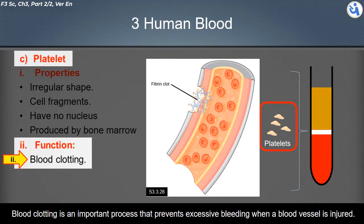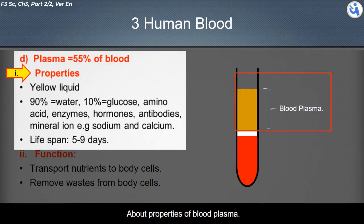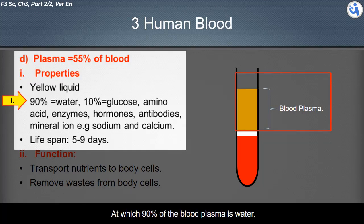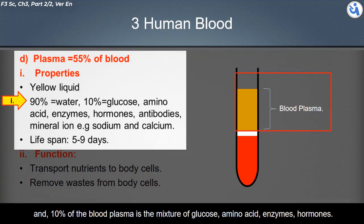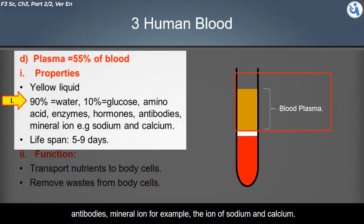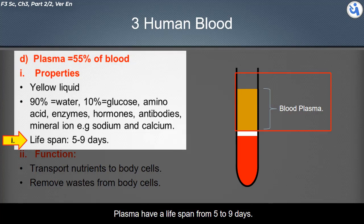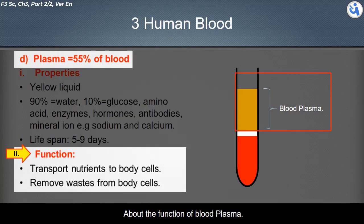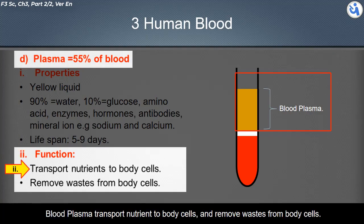Platelets function in blood clotting. Blood clotting is an important process that prevents excessive bleeding when a blood vessel is injured. Blood plasma is a yellow liquid, of which 90% is water and 10% is a mixture of glucose, amino acids, enzymes, hormones, antibodies, mineral ions, and proteins — for example, sodium and calcium ions.